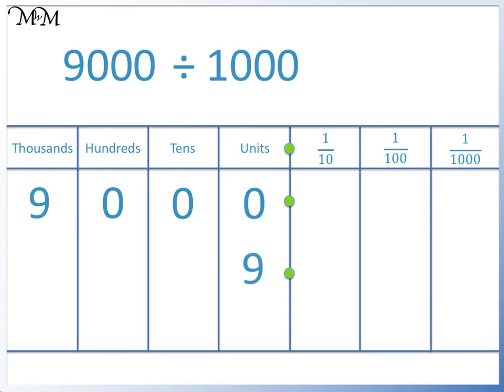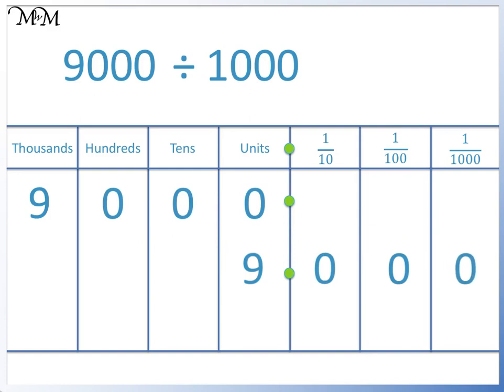We then also move each 0 three places to the right. We have 9.000. Because there are no digits other than 0 after the decimal point, we can ignore them. The zeros just mean that there is nothing of value there. So 9000 divided by 1000 equals 9.